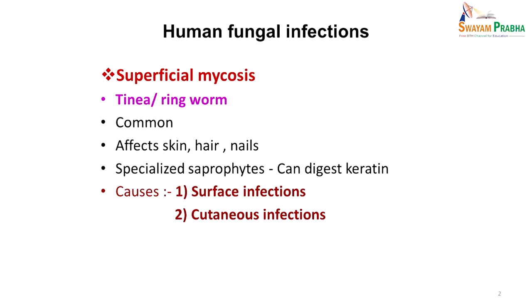Mycosis is the diseases caused by fungi. Superficial mycosis, which we will talk about today, mainly comprises tinea and ringworm, which are common infections. They affect skin, hair and nails and are mostly caused by fungi which are specialized saprophytes — that is, they can digest keratin. Most organisms cannot digest keratin, so they cannot cause infection in intact skin, but these fungi can because they can digest keratin and invade. They can cause either surface infections or cutaneous infections.